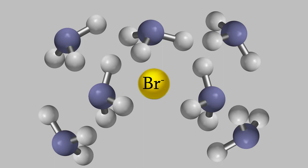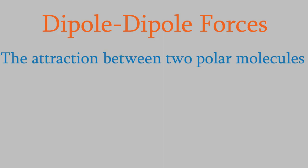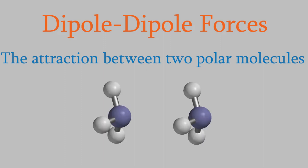The next type of intermolecular force is the dipole-dipole force. Again, the name tells you exactly how the force works — it's the attraction between two molecules that are dipoles. So, for example, if we have two ammonia molecules, the negatively charged side of one will be attracted to the positively charged side of the other one. And that's a dipole-dipole force.